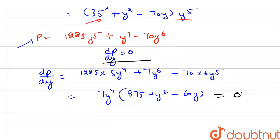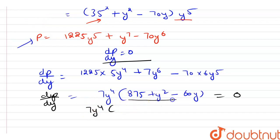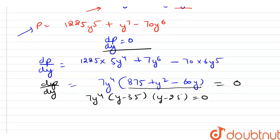As we know that dP/dy is equal to 0, let's put this value equal to 0. After solving further, 7y⁴ can be factored out, and this value can be written as y into (y minus 35) into (y minus 25), and this whole value must be equal to 0. So from here, the value of y can be determined: that is 0, 25, and 35.